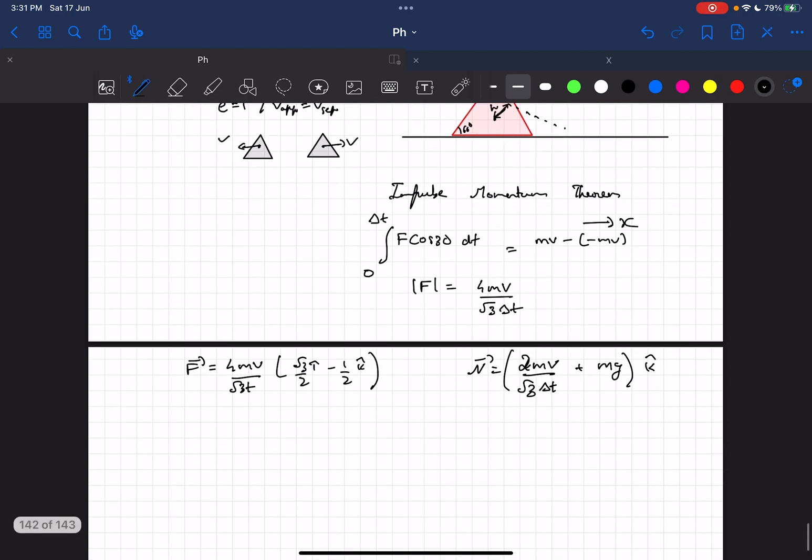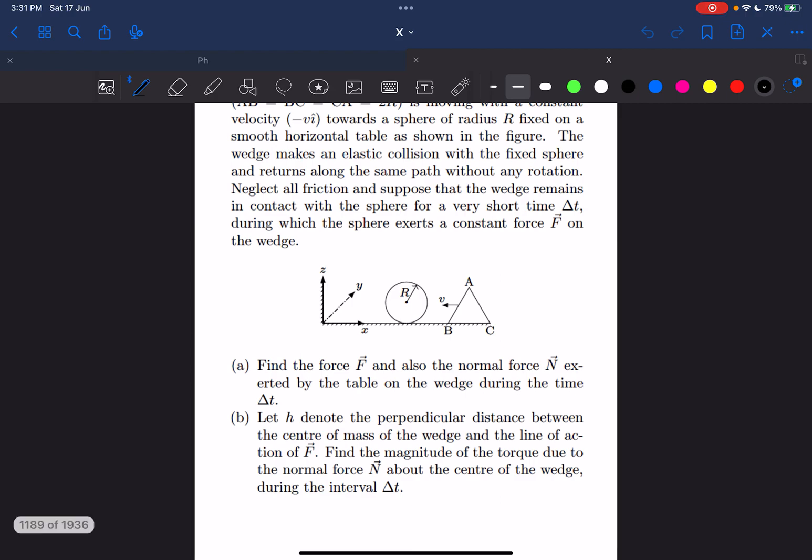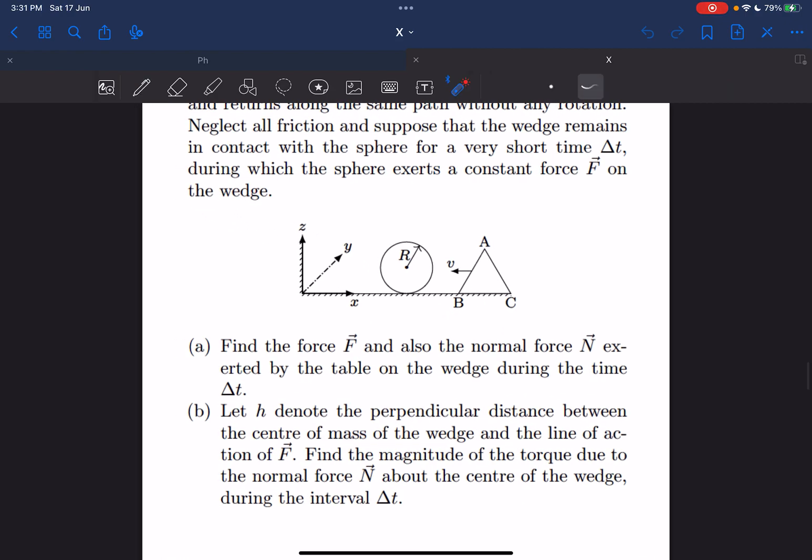The direction would be in the k cap direction. So this is the force of normal. Now in the next part of the question they have given: let h denote the perpendicular distance between the center of mass of the wedge and the line of action of force F.